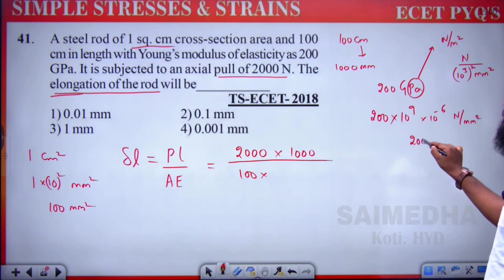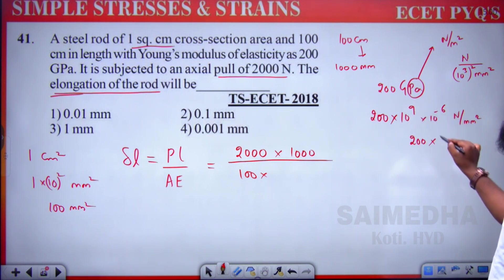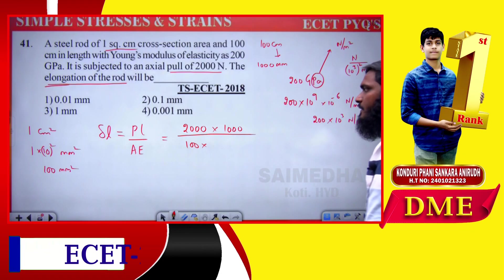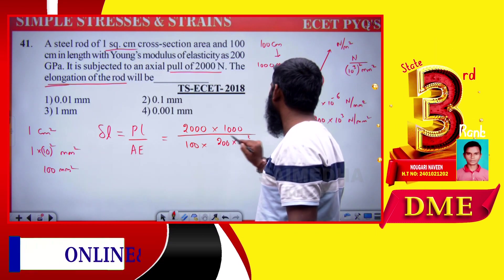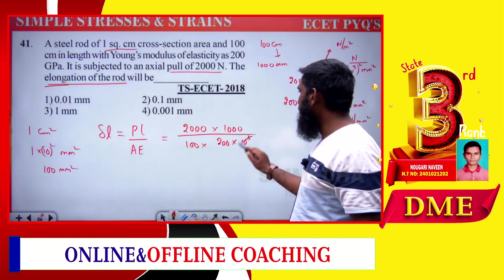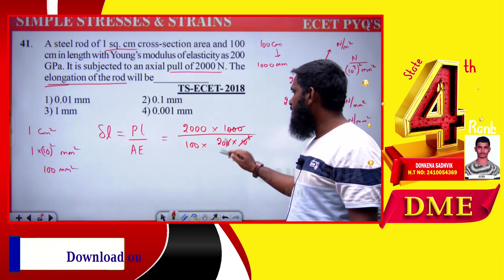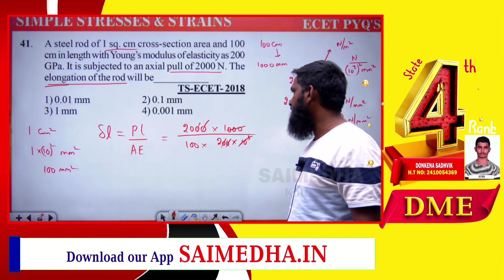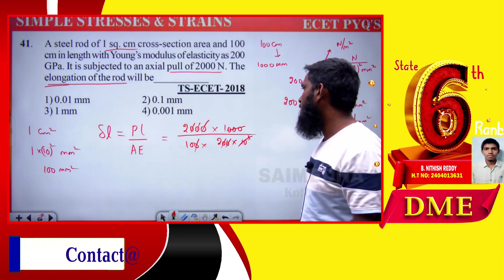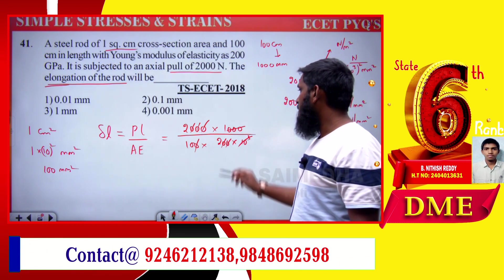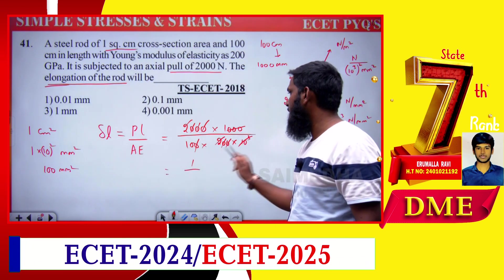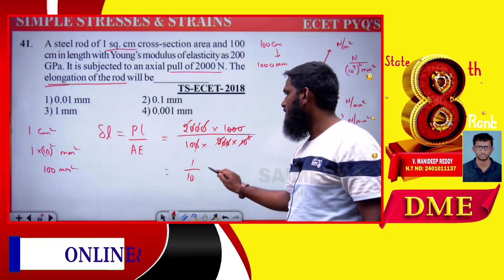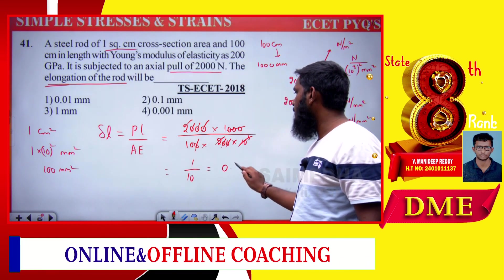Substituting: 200 into 10 power 3 Newton per mm square. The 10 power 3 cancels with 1000 in the numerator, the zeros cancel, and 2 cancels, leaving 1 divided by 10 in the denominator — which equals 0.1 mm.